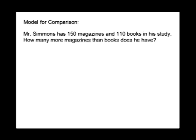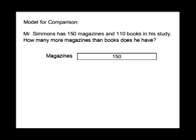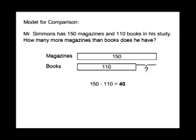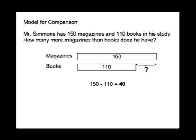In this example, we'll do a model for comparison. Mr. Simmons has 150 magazines and 110 books in his study. How many more magazines than books does he have? The magazines represent 150 in our box, and the books are represented by 110. Our equation is 150 minus 110. That means he has 40 more magazines than books.